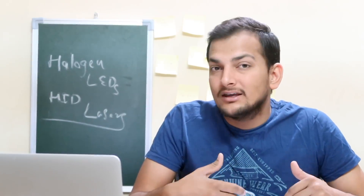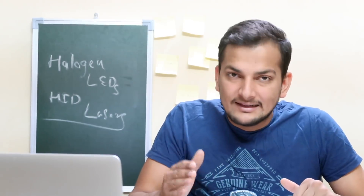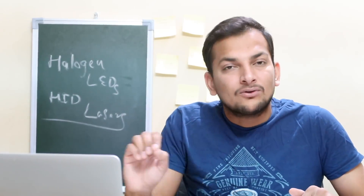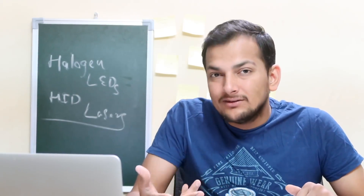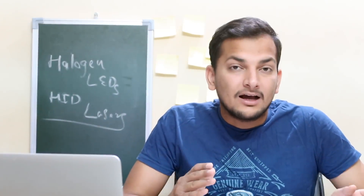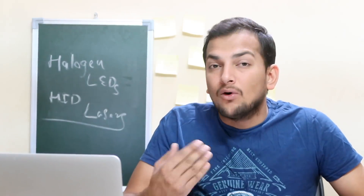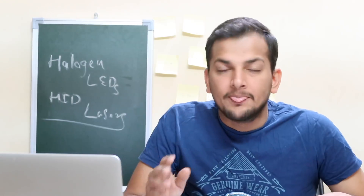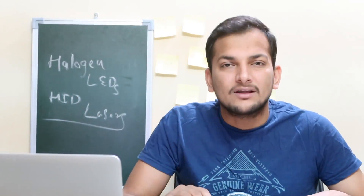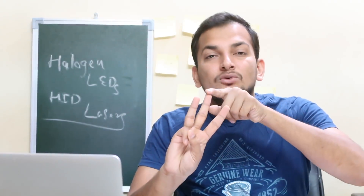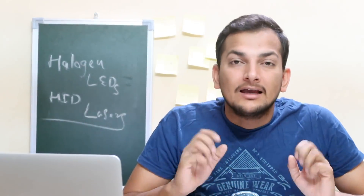You cannot judge brightness based on Kelvin alone — a 3500K light is not necessarily less bright than a 5000K one. That is where lumens come in. Lumens actually decide the brightness: more lumens means more brightness. Wattage tells you how much energy your light will consume.